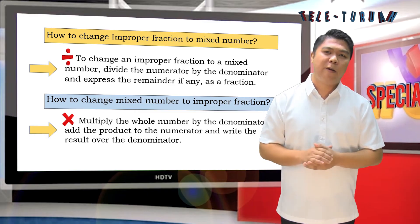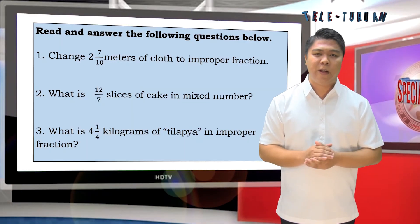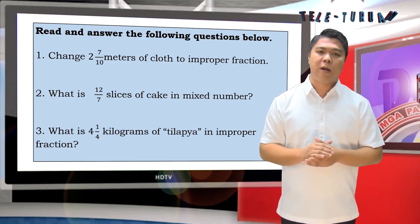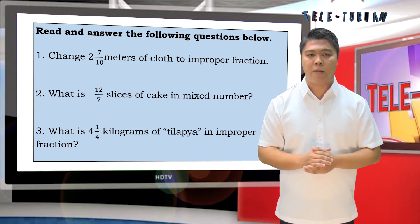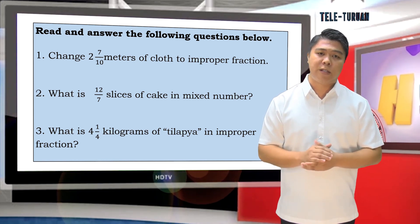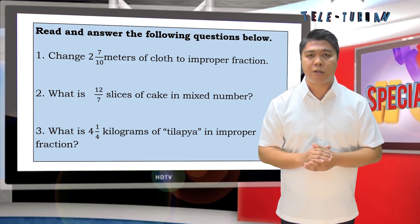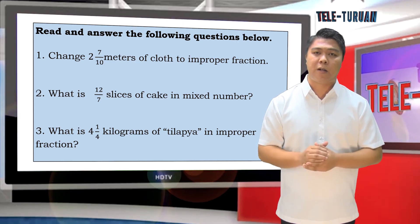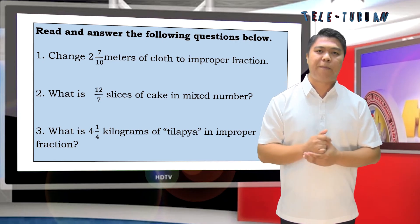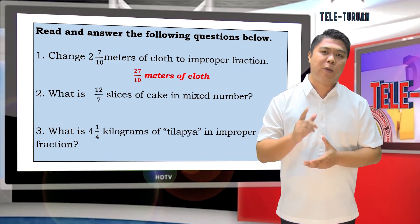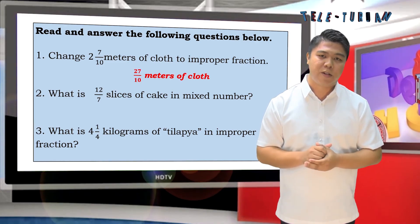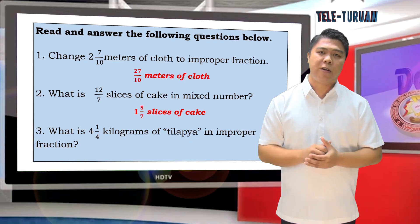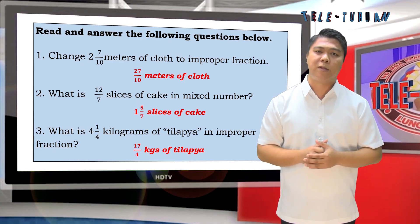It's your turn. Read and answer the following questions. Number 1: Change 2 and 7/10 meters of plot to improper fraction. Number 2: What is 12/7 slices of cake in mixed number? Number 3: What is 4 and 1/4 kilograms of tilapia in improper fraction? The answer to number 1 is 27/10 meters. The answer to number 2 is 1 and 5/7 slices of cake. The answer to number 3 is 17/4 kilograms of tilapia.